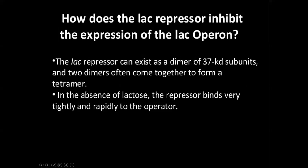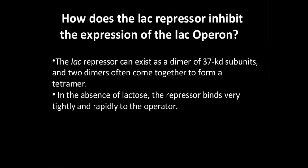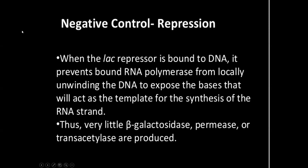How does the lac repressor inhibit the expression of the lac operon? The lac repressor can exist as a dimer of 37 kD subunits, and two dimers often come together to form a tetramer. In the absence of lactose, the repressor binds very tightly and rapidly to the operator, so these genes will not be turned on. This is a very good example of negative control or repression.